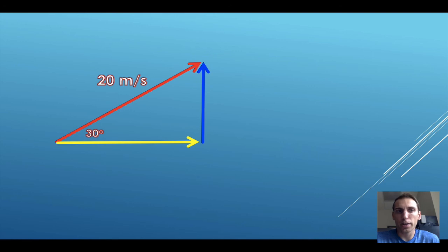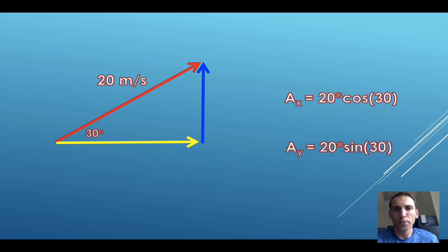Go ahead and try this out on your calculators. See if you can take this 20 meter per second vector that's directed 30 degrees above the horizontal and find the vertical and horizontal components. To find your X component, take 20 times the cosine of 30. To find your Y component, take 20 times the sine of 30. You should end up with something close to 17 meters per second for your X component or your horizontal component, and 10 meters per second exactly for your vertical or Y component.